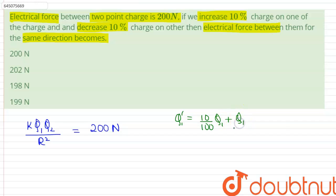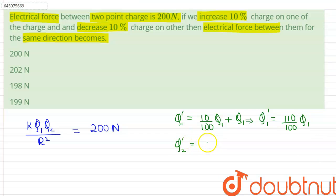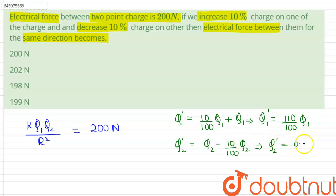The new charge q1 dash is q1 plus 10/100 of q1, therefore q1 dash equals 110/100 of q1, which is 1.1*q1. And q2 dash, the new value of charge q2, is q2 minus 10/100 of q2, which gives q2 dash equals 0.9*q2.